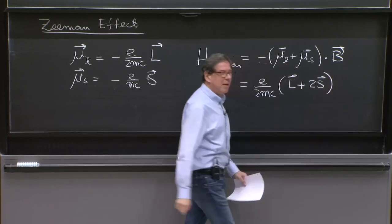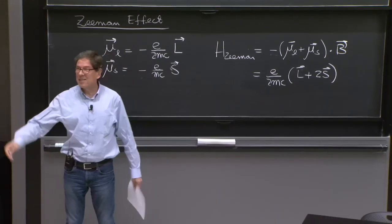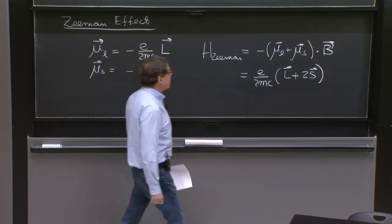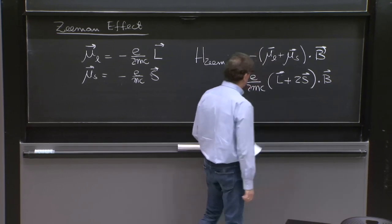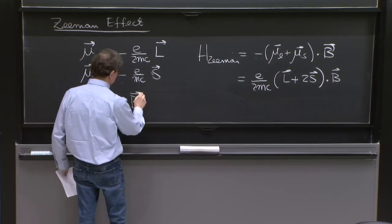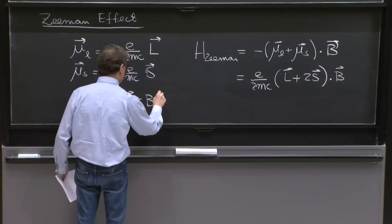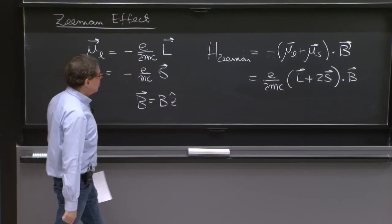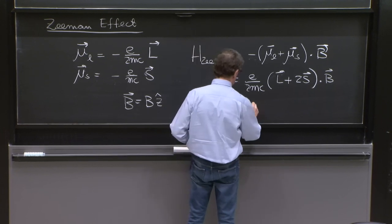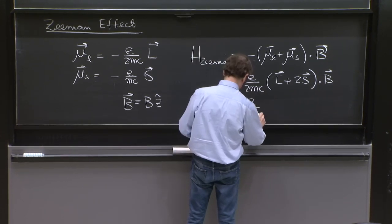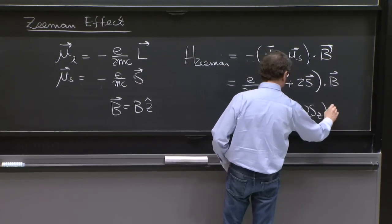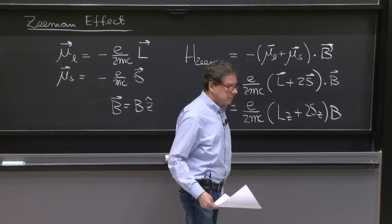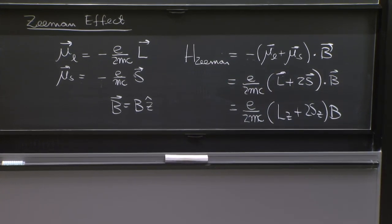So it's not L plus S. It's L plus 2S times B. And many times we think of B, align the axis so that it is in the z direction. So this turns out to be E over 2mc, Lz plus 2Sz times B. So this is the Zeeman Hamiltonian.